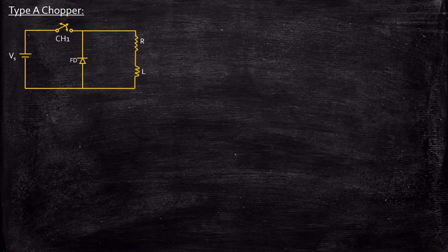Hello everyone. In this video we will be taking a look at type A chopper. So let's get started. This is the circuit diagram of a type A chopper. Now in order to understand the circuit operation of this particular chopper, let us consider what happens during turn-on and what happens during turn-off.